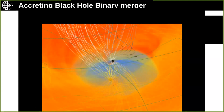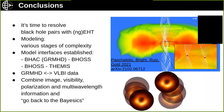In conclusion, it's really time to start resolving not only shadows but black hole pairs with EHT or NGEHT. The modeling is already implemented at various stages of complexity. The model interfaces between the GRMHD code, the ray tracing and radiative transfer code, and the Bayesian inference scheme are all in place. We are now in an excellent situation to bring GRMHD models into direct connection with VLBI data — combining image information, visibility information, super resolution, polarization information, and multi-wavelength aspects.